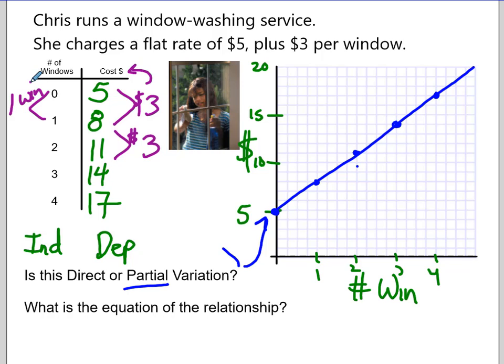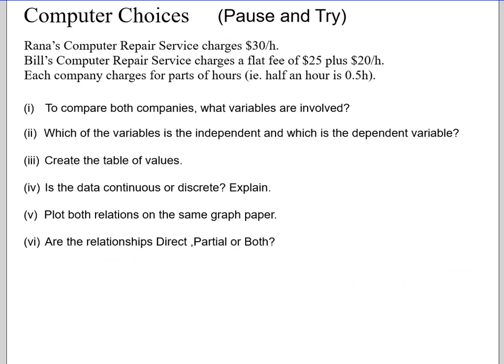So what is the equation of this relationship? Well, we know that the starting amount comes from whatever goes with the 0. So we're going to have a 5 involved here. And we know the multiplier is normally tied with the first difference. So the equation here would be the amount you owe Chris is going to be $3 times the number of windows plus the $5 for showing up. And that is Chris's equation.